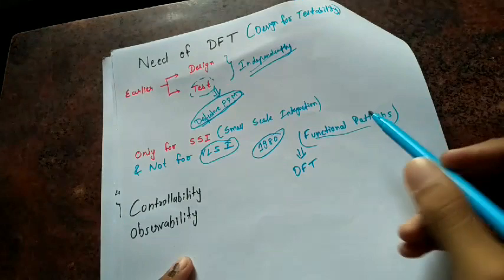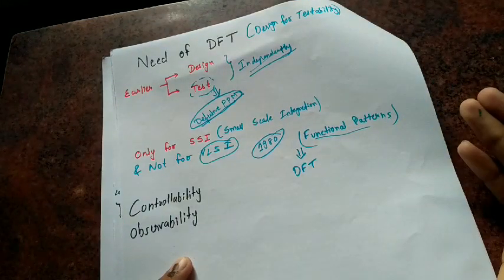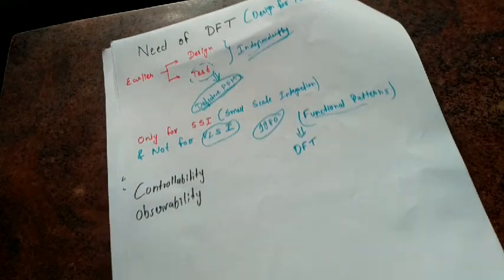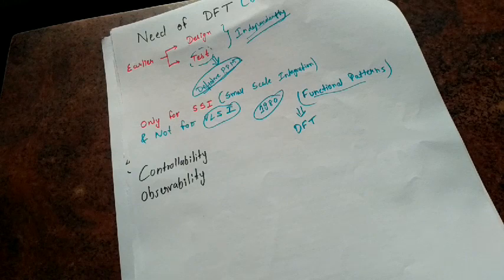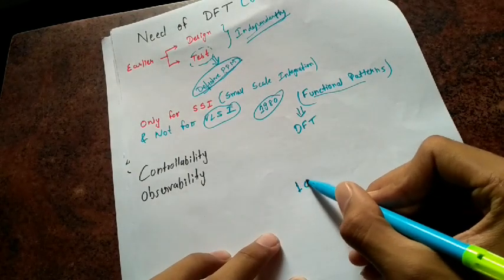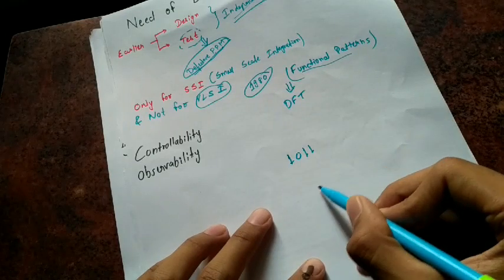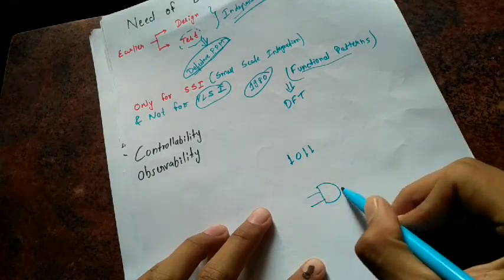So in 1980s, what happened? One more approach was developed, which is based on functional patterns. So what happens? Some pattern is being generated, let's say one zero one one, some this kind of pattern. And let's say this is one circuit.